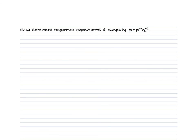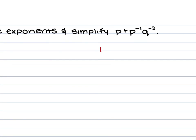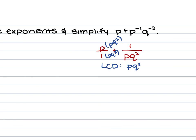For the last example, we have p plus p to the negative first power times q to the negative second power. Rewriting with positive powers: p/1 plus 1/(pq squared). The least common denominator between these two is pq squared. Multiply the top and bottom of the first fraction by pq squared, giving (p squared q squared plus 1)/(pq squared). You cannot factor this, so it stays as written.